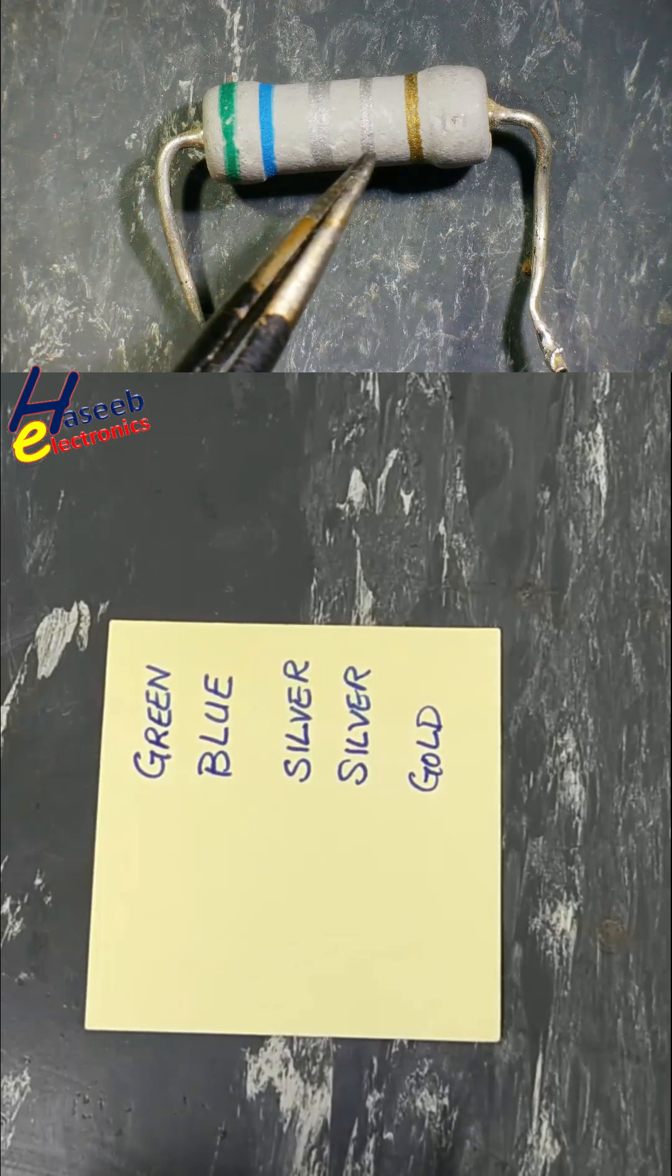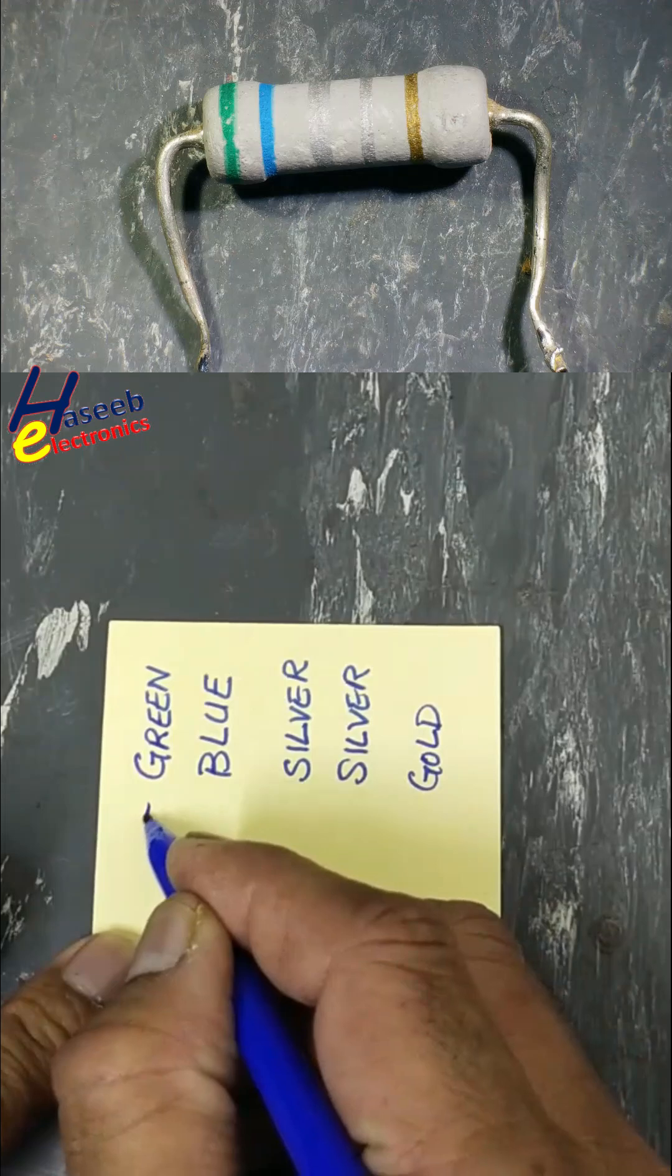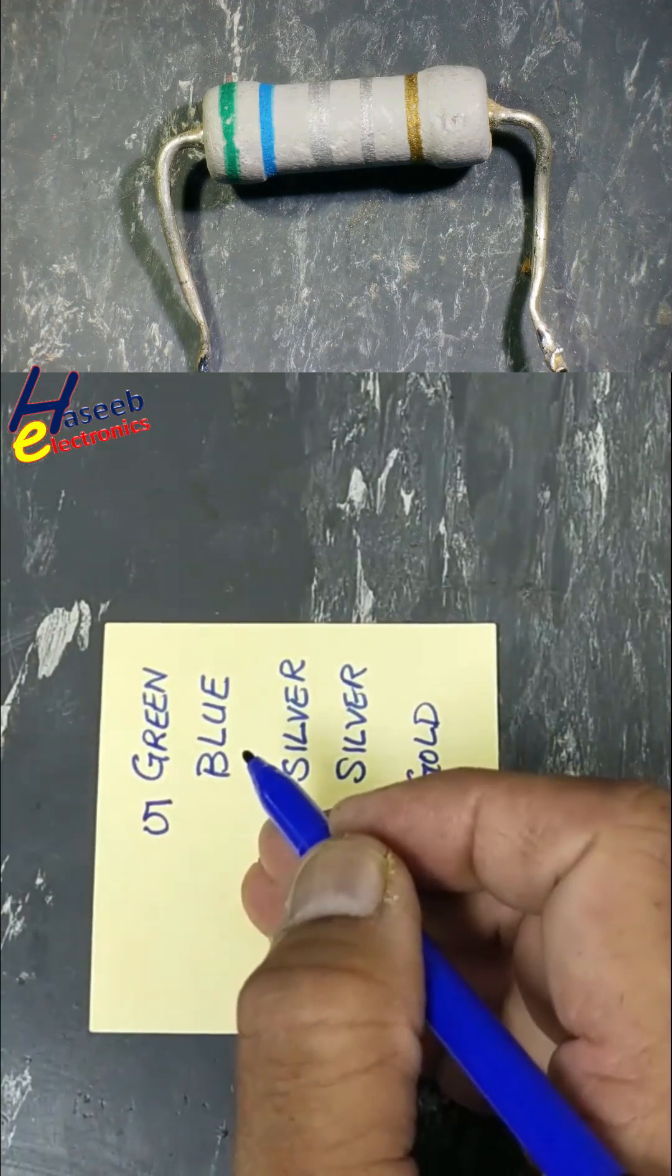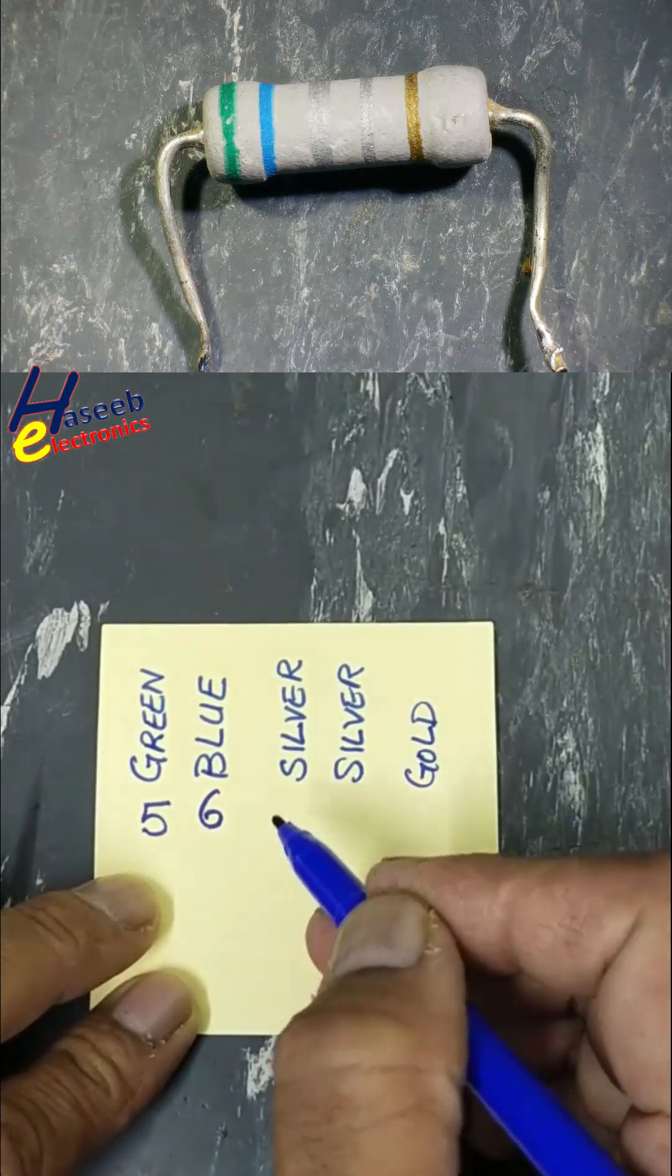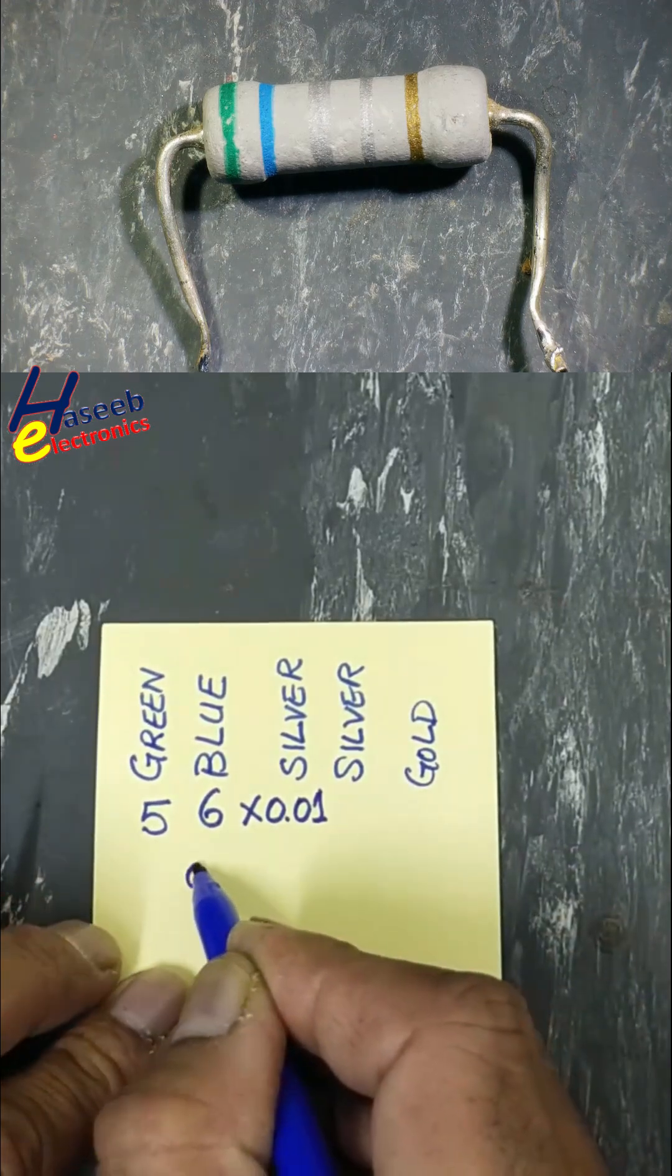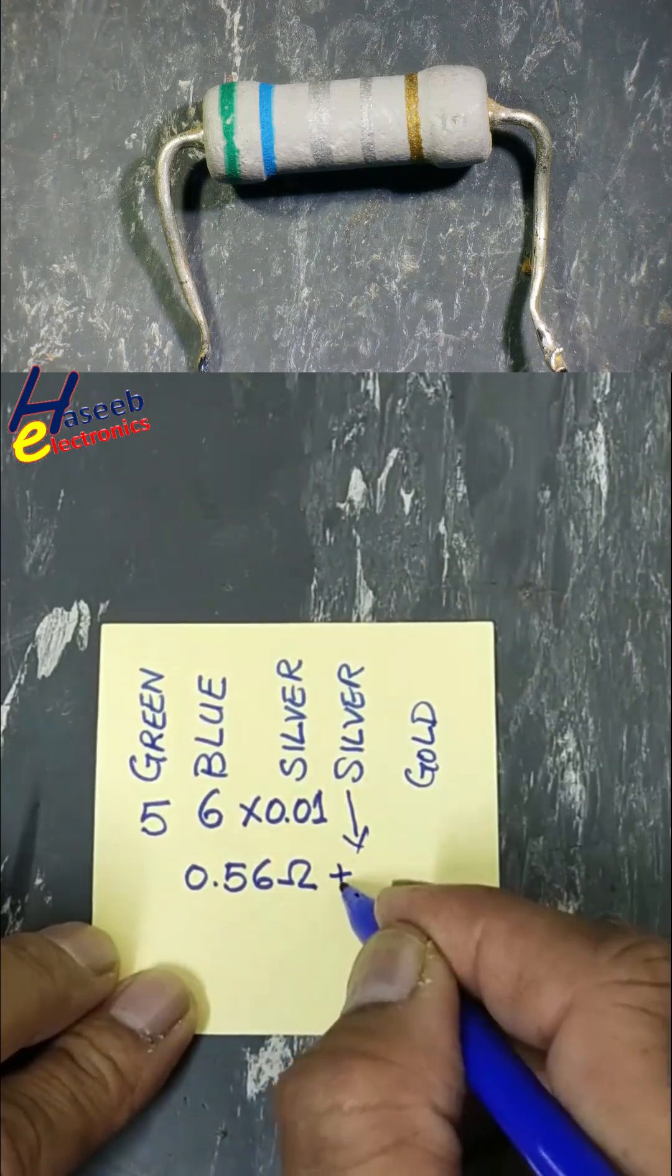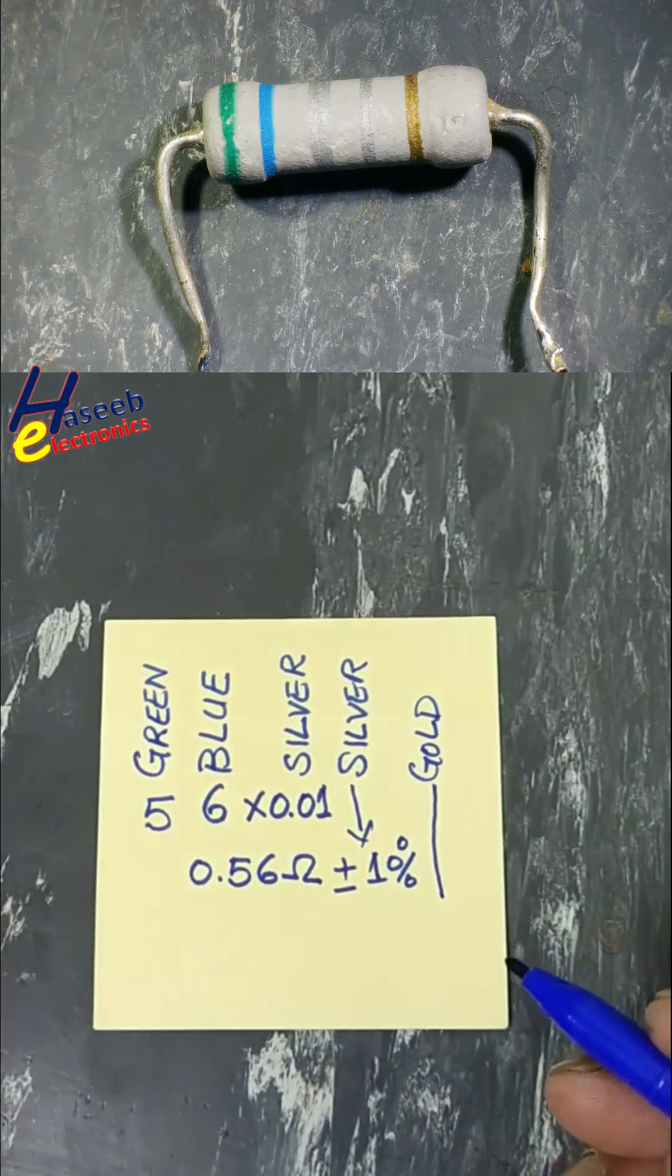This is a four-band resistor with failure rate. First band green equals 5 significant digit, then blue equals 6, then silver multiplier. We will multiply with 0.01, that means 0.56 ohms resistor. This is tolerance plus minus 10% in four band resistor.